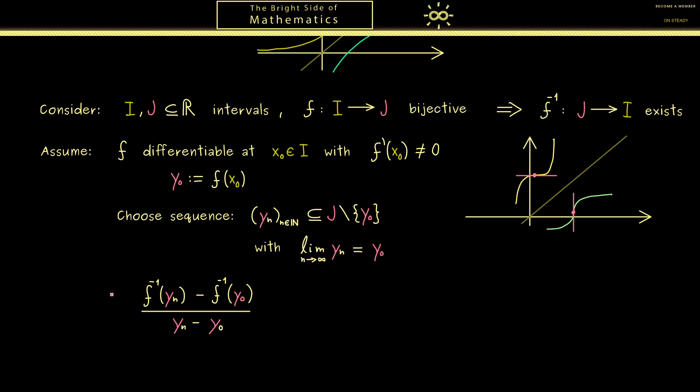However before we do that we first want to work with this expression here, because we want to translate this back to the original function f. And we already know this works for y0 because this is simply f of x0, and of course it's no problem at all. We can also do this for yn. Since by the definition of the inverse function we know there is exactly one point we can call xn that fulfills that f of xn is yn. Of course this is simply the bijectivity.